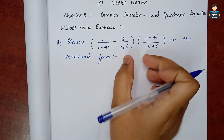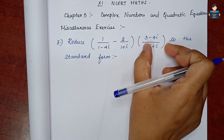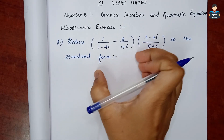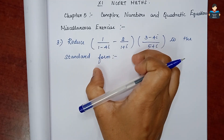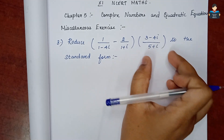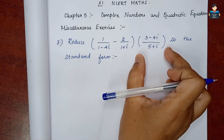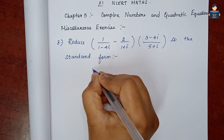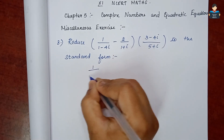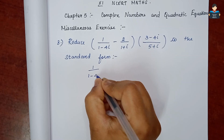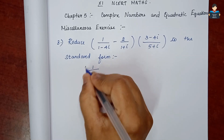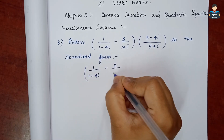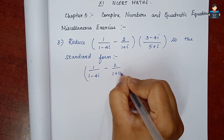We have two parts. In the first part we simplify and multiply: 1/(1-4i) minus 2/(1+i).